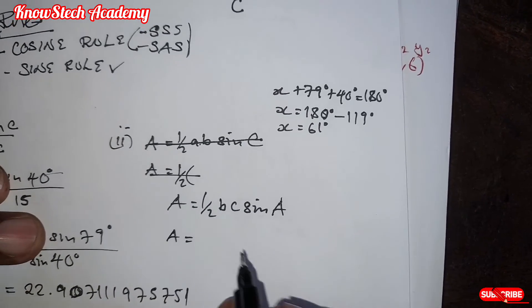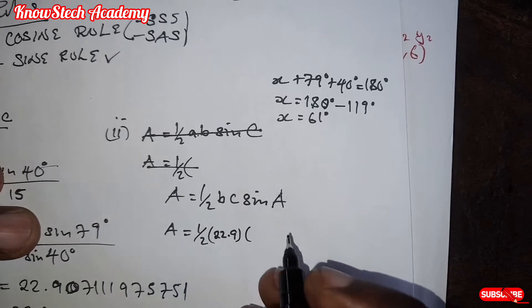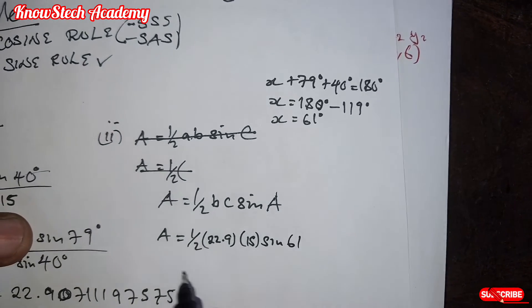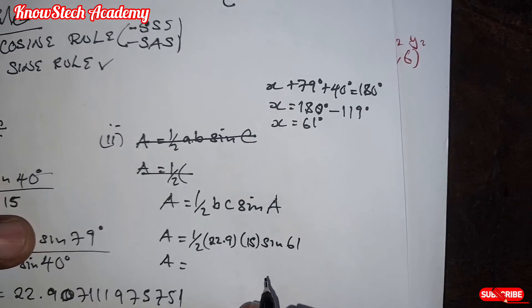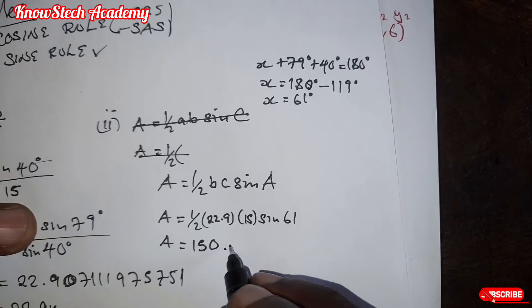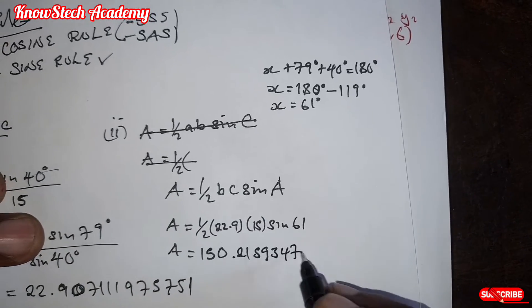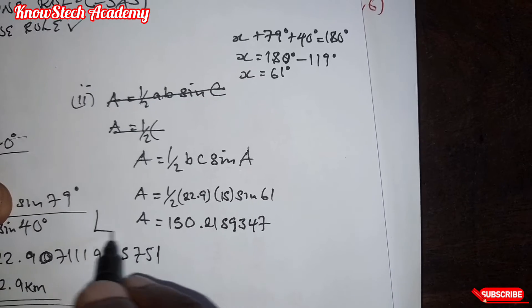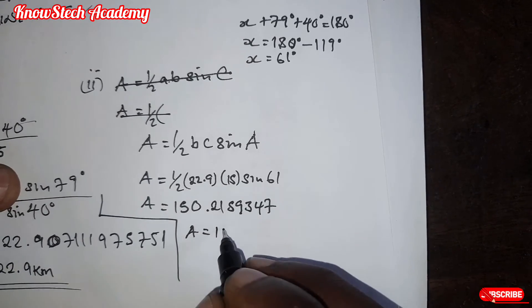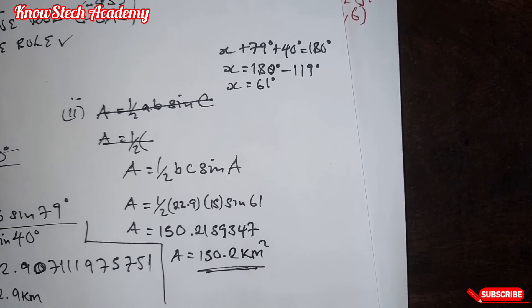So area is equal to half, B is 22.9, then C is 15, sine A. The angle we found previously, which is 61. So when you calculate here, we're going to find 150.2159347. When you round this one off to one decimal place, it will be 150.2 kilometers squared.